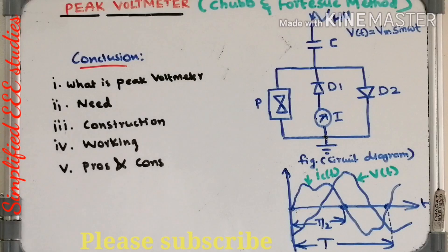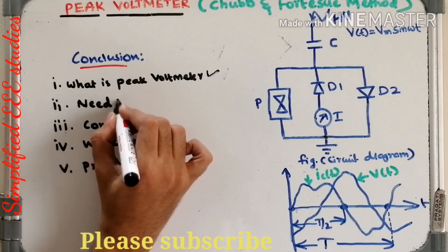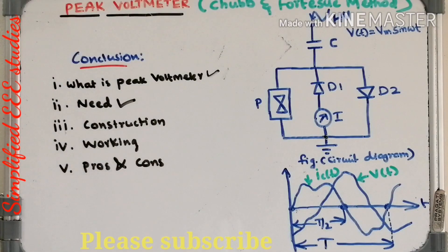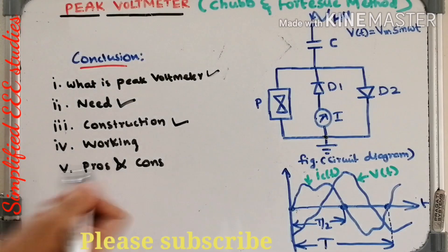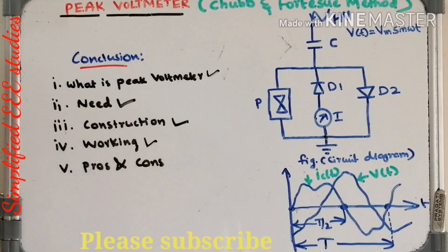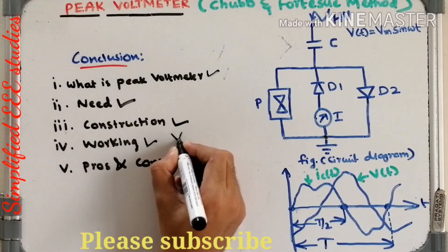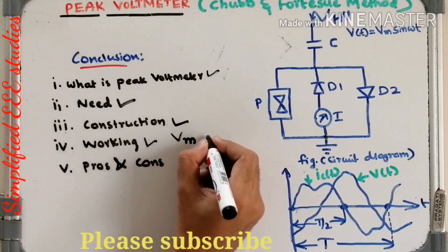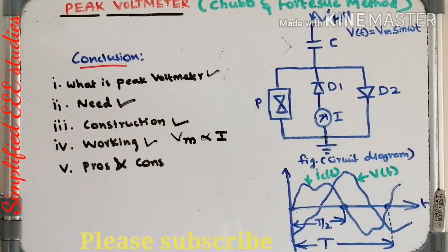Let me conclude the session. We have discussed that the peak voltmeter is a direct method of measuring the peak value of high voltage AC. We covered the construction details and main components, how the peak voltmeter operates, and derived the expression that Vm is directly proportional to the rectified current I. We also listed the various pros and cons related to the peak voltmeter. Thank you for watching this video — please share and don't forget to subscribe.